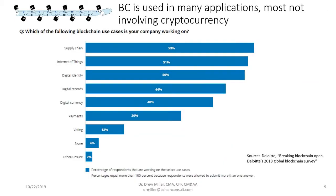A Deloitte survey on how large companies are using blockchain found that supply chain is the number one application area for big businesses — it's ideal for integrating IT systems and business partners. The Internet of Things came in as the second big area, although a lot of those IoT applications are in many cases supporting a supply chain application.